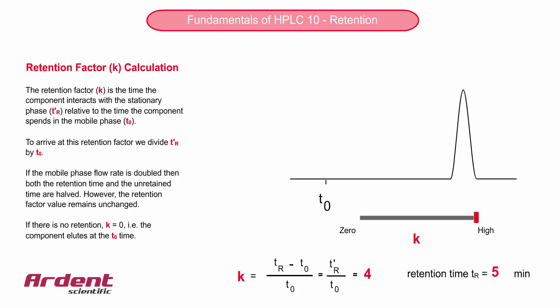Now let's think about what would happen if the flow rate of the mobile phase doubled. The unretained time would half, and also the retention time would half. The new retention time is now 5 minutes, and the new unretained time is 1 minute.